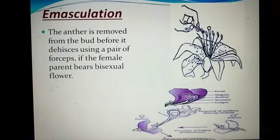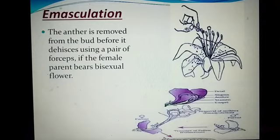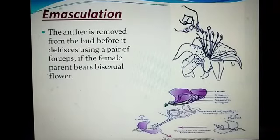The first step is emasculation. In emasculation, the anther is removed from the bud before it dehisces, using a pair of forceps. In a bisexual flower, we remove the anther. Remember: emasculation means we remove the anther, so the plant now has only the female parts — that means stigma, ovary, and style — only the gynoecium part remains.